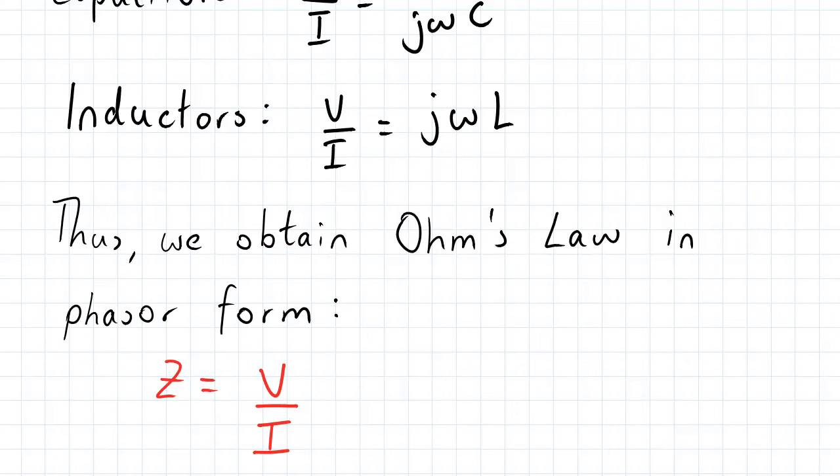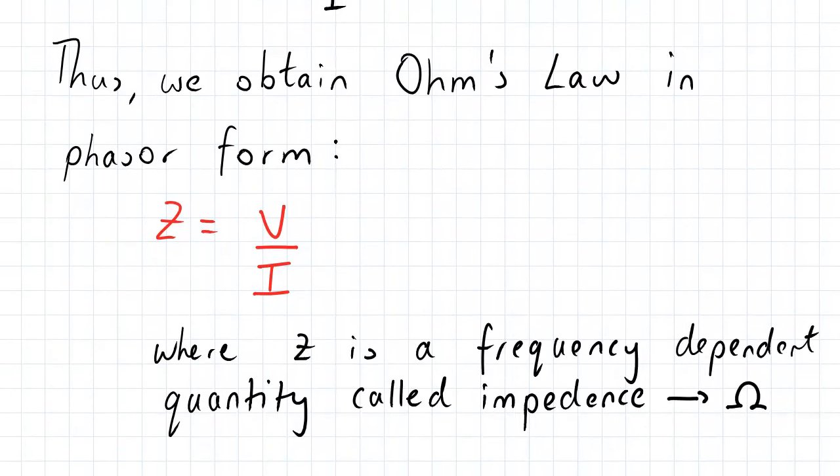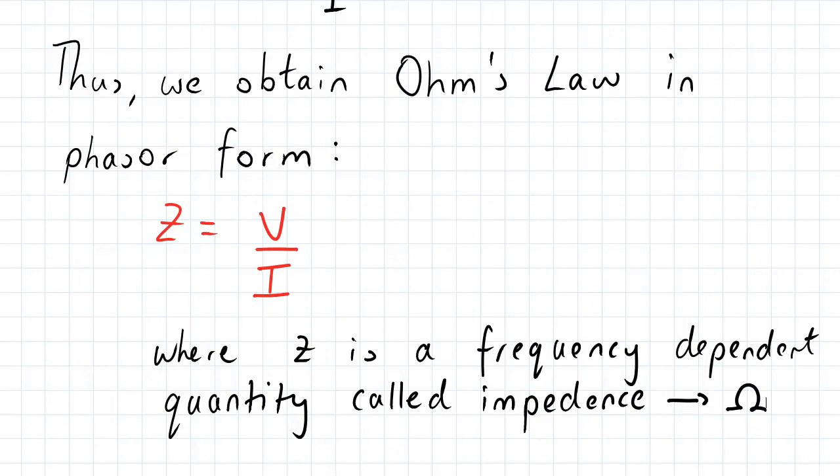So Z is equal to V over I, where Z is a frequency dependent quantity called impedance and it's also measured in ohms, like resistance.